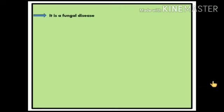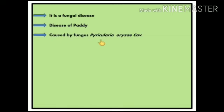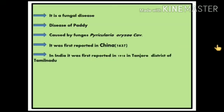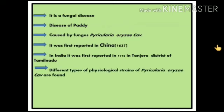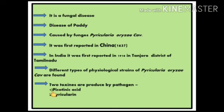Now we discuss some important facts about blast of rice. It is a fungal disease occurring on paddy, caused by the fungi Pyricularia oryzae. In India, it was first reported in China in 1637, but nowadays this disease is reported from all rice-growing countries of the world. In India, this disease was reported by Butler in 1918 at Tanjore district of Tamil Nadu. Two toxins are produced by the pathogen: piriculonic acid and pyricularin, which are mainly responsible for crop loss.